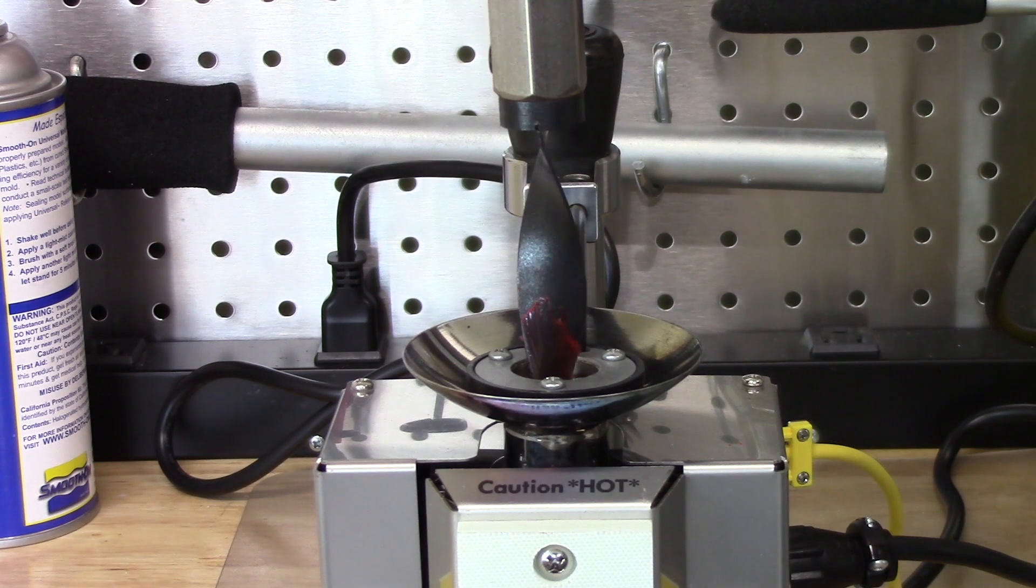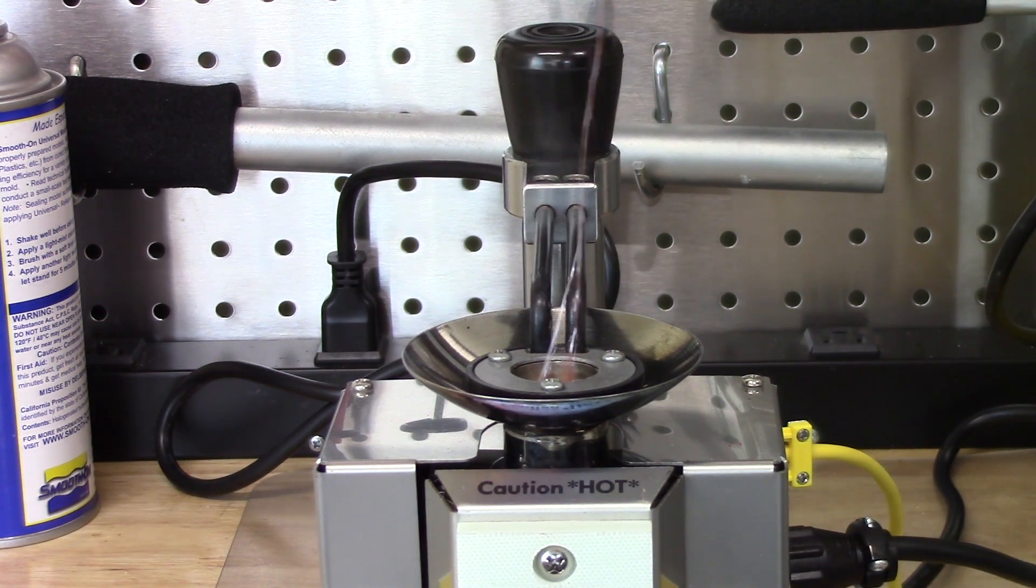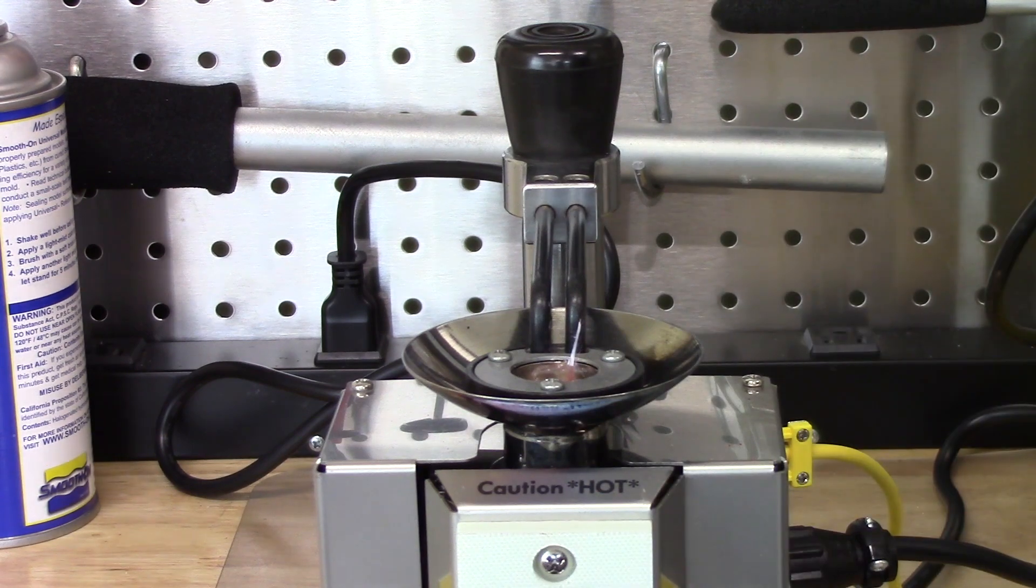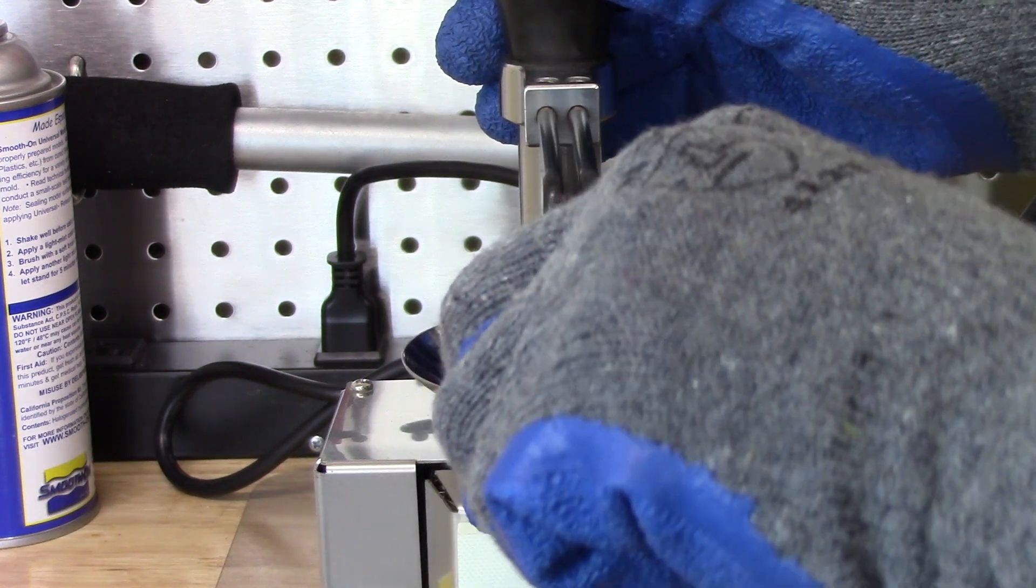Remove the mixing tool. Unlock the stripper assembly and reposition it away from the injection tube.